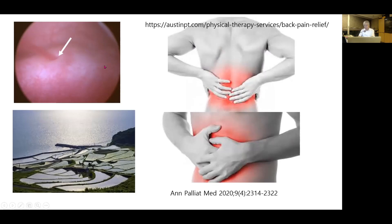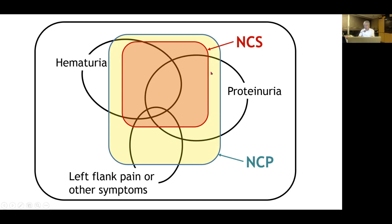Nutcracker phenomenon may be related to various orthostatic intolerance, such as orthostatic proteinuria, tachycardia, or dizziness in the standing posture. We need to be clear in using two terms: Nutcracker phenomenon is just a phenomenon of compression of the left renal vein between the aorta and the superior mesenteric artery, and it is called Nutcracker syndrome when accompanied by symptoms or signs such as hematuria, proteinuria, left flank pain, or other related symptoms.